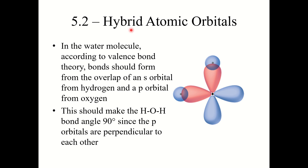In the water molecule, according to valence bond theory, bonds should form from the overlap of an s orbital from hydrogen and a p orbital from oxygen. This should make the HOH bond angle 90 degrees, since p orbitals are perpendicular to one another. But we know from VSEPR theory that's not the case — that bond angle is actually a bit less than 109.5°, since water has a bent molecular geometry.